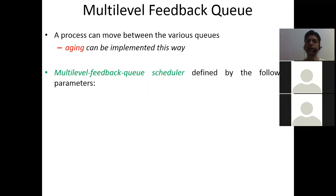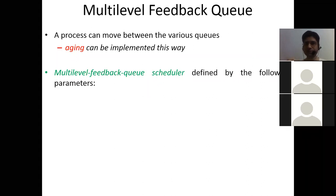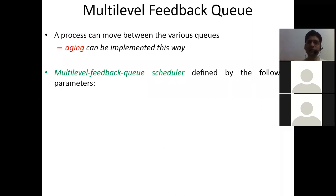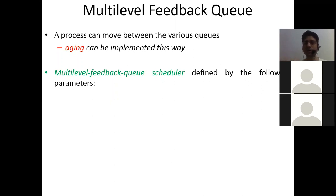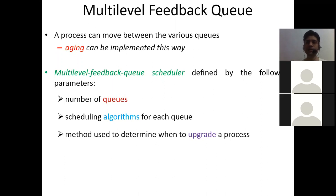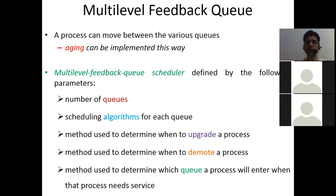The parameters are: first, the number of queues; second, the scheduling algorithm for each queue; third, a method or scheme on which basis you are promoting or upgrading a process — increasing its age; fourth, a method on which basis you are demoting a process or decreasing its priority; and fifth, a method which will decide in which queue you will send your process when it first arrives in the ready queue for execution.